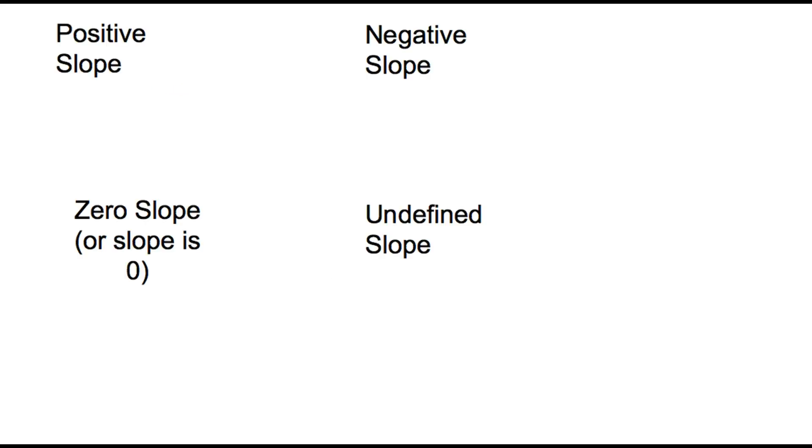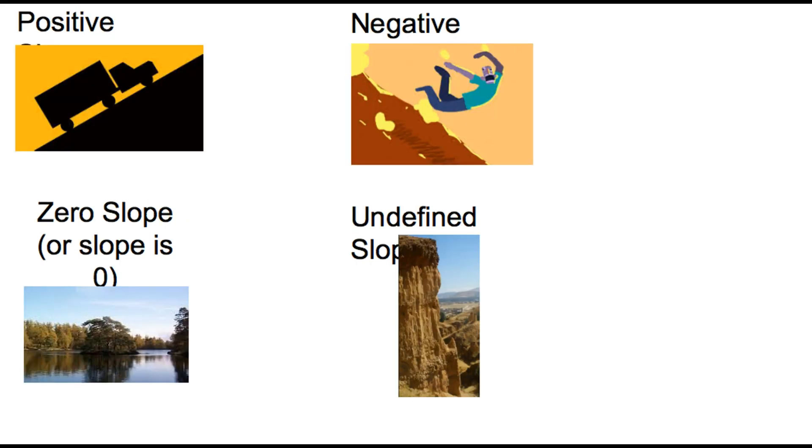There are four kinds of slope. We've got positive slope, negative slope, zero slope, and an undefined slope. Let's take a look at these real-world pictures. You can see that the truck is moving up. You can see that this person is falling down. You can see that this water is very flat. The slope is zero and you can see that this cliff is a vertical line. We call that an undefined slope.